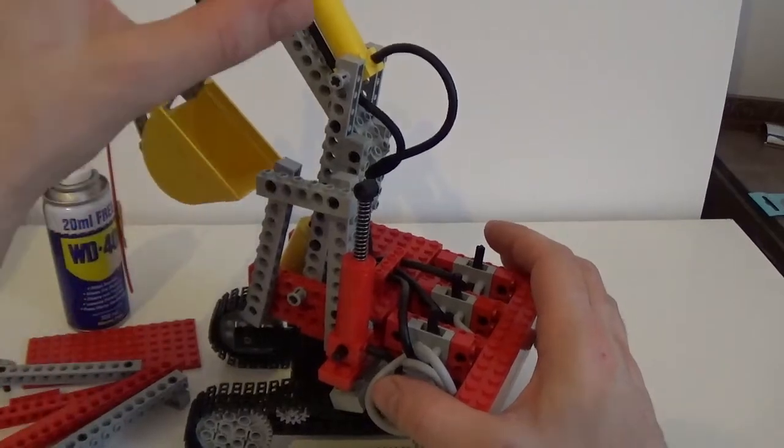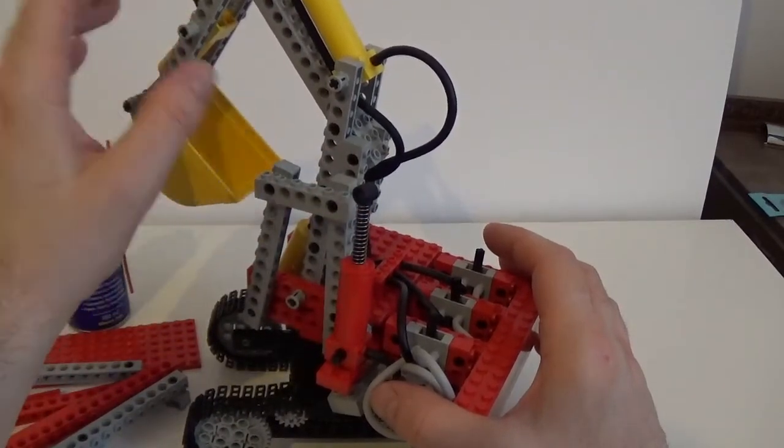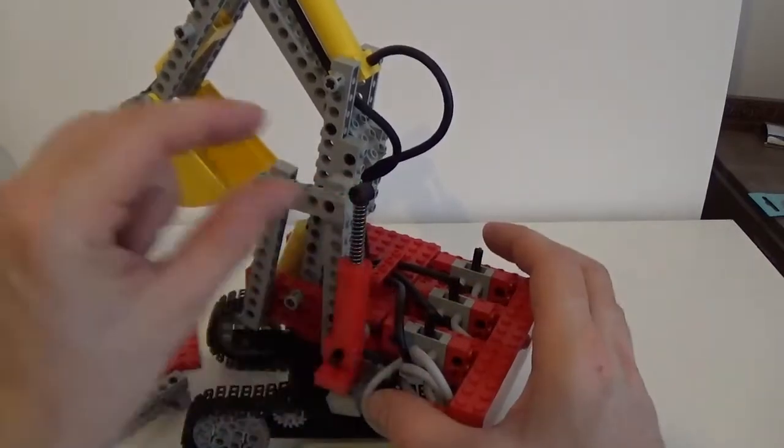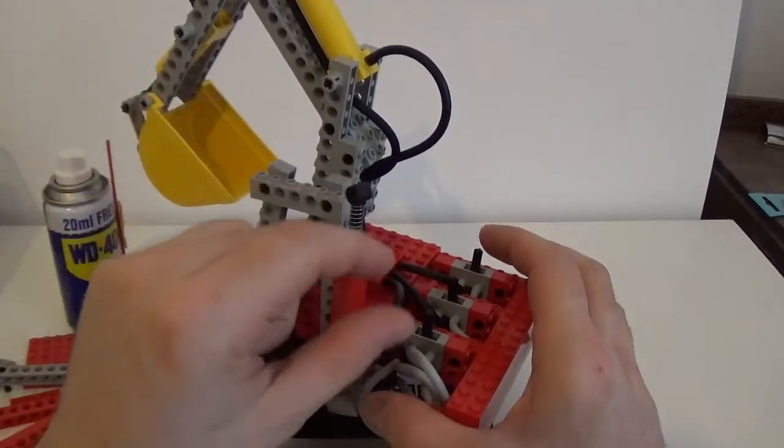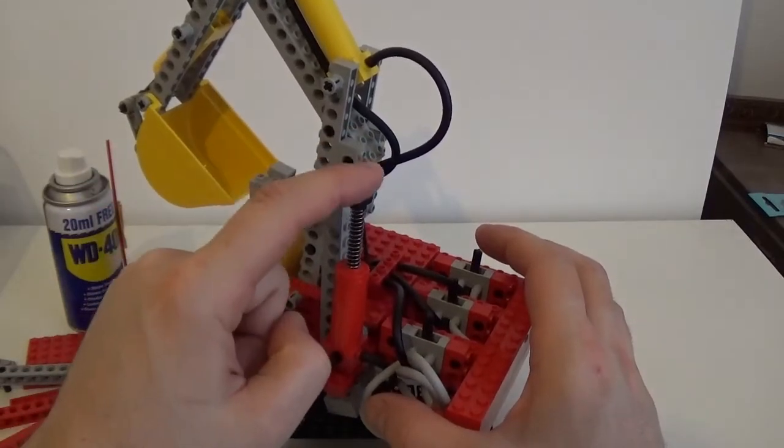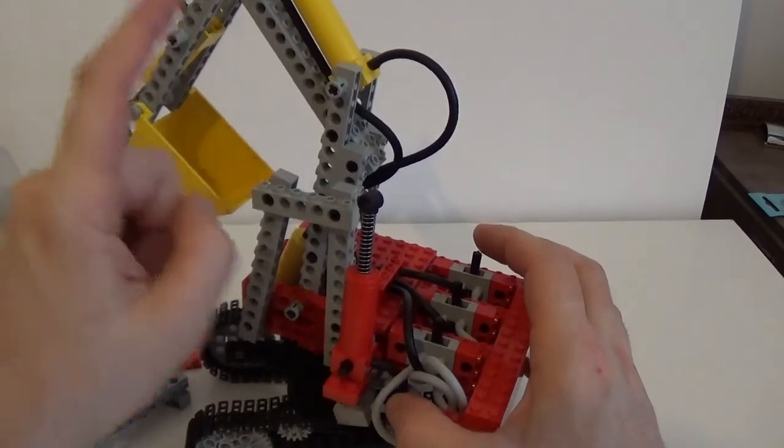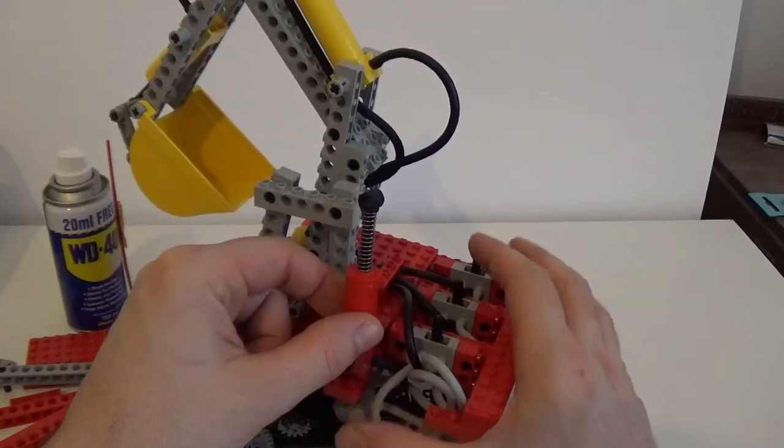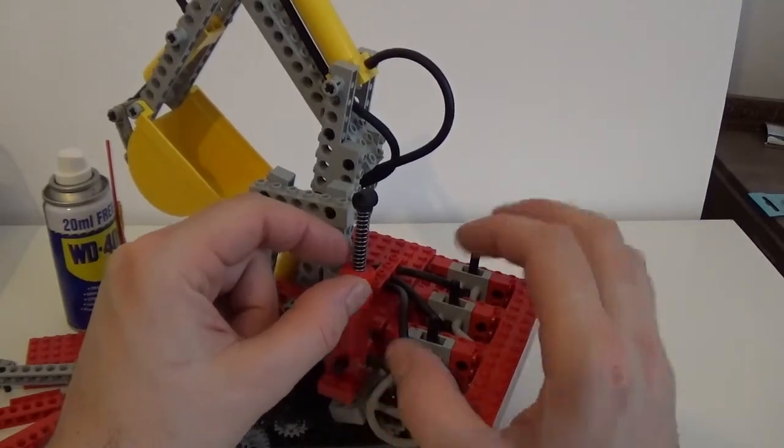Then what I did after checking that was to start putting one switch at a time in the system between one red piston and one yellow one. To check every single switch, I would connect the red piston